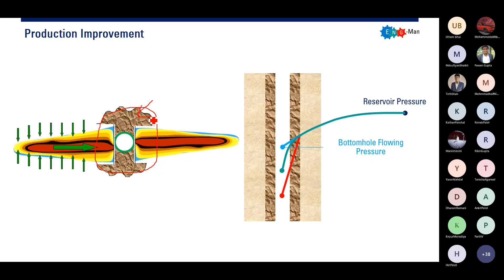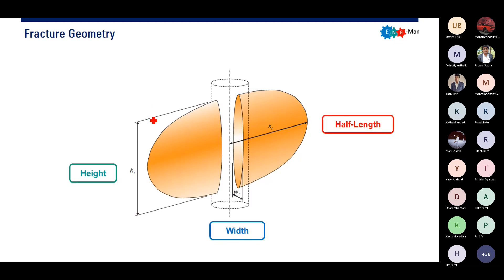These are the most important geometries for our fracturing. First, the half length XF. Then the height of the fracture H, and the width of the fracture W. You need to remember the half length, height, and width — these are the characteristic geometries of our fractures.